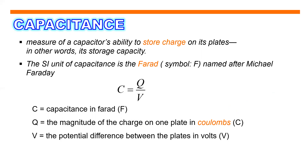The SI unit of capacitance is the Farad. We use the symbol capital letter F to express the capacitance. It is named after Michael Faraday. Capacitance is equal to Q over V, where C is capacitance expressed in Farads, Q is the magnitude of the charge expressed in Coulombs, and V is the potential difference between the plates expressed in volts.